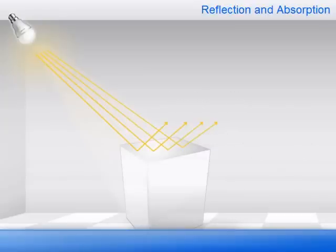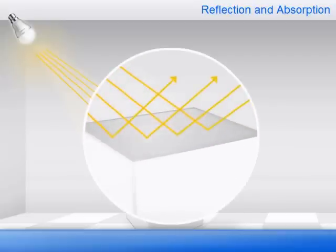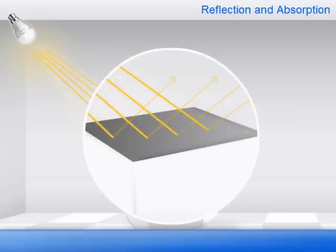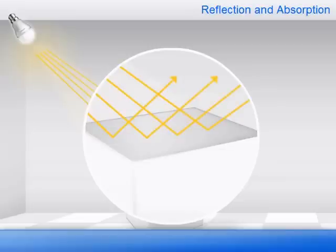Reflection ranges from less than a few percent for very dark surfaces like black velvet, to over 90 percent for aluminum, silver, and certain types of white paint.